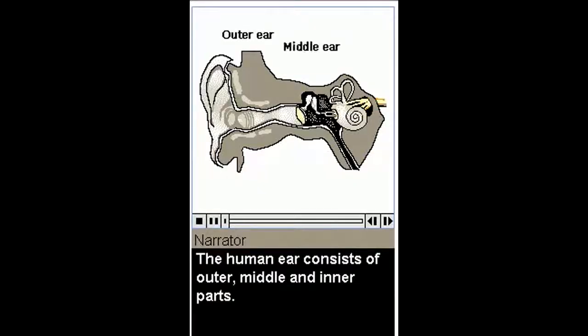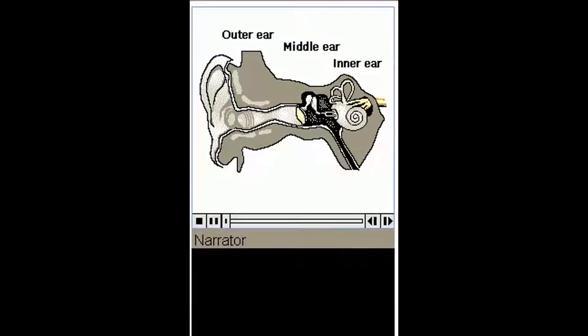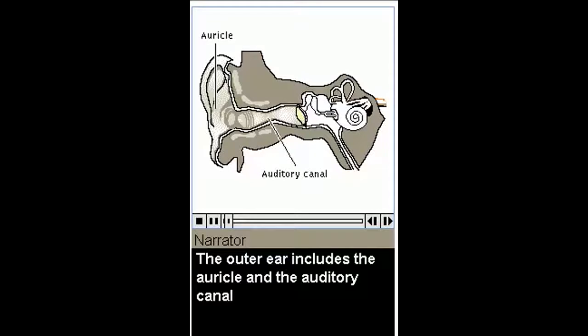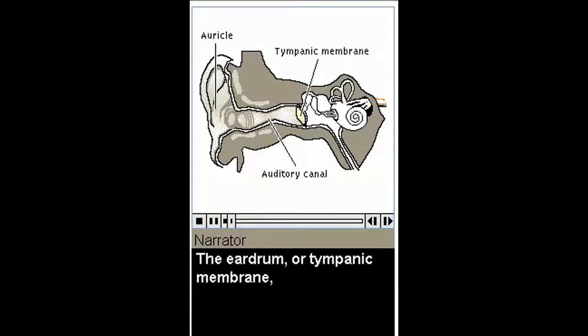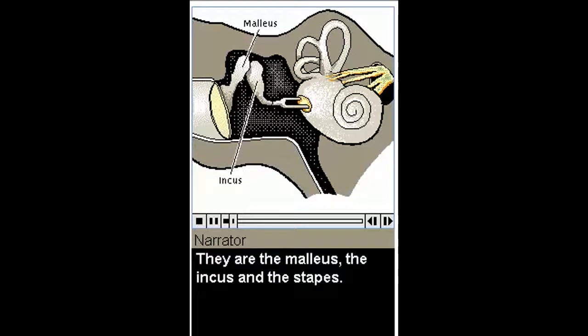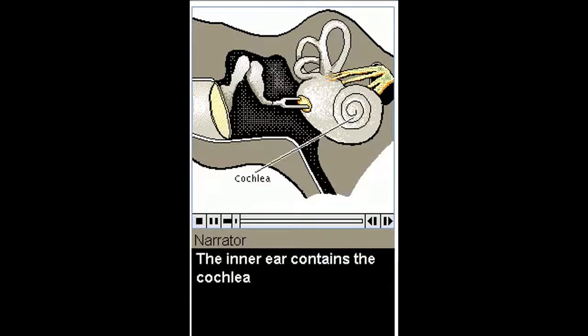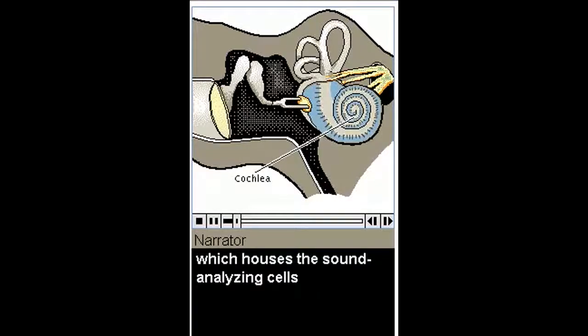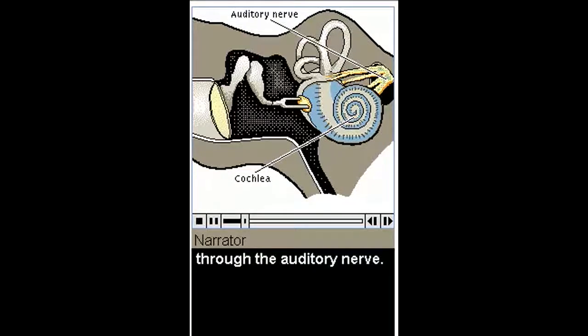The human ear consists of outer, middle, and inner parts. The outer ear includes the auricle and the auditory canal. The eardrum, or tympanic membrane, marks the boundary between the outer ear and the middle ear. The middle ear contains three small bones connecting the eardrum to the inner ear. They are the malleus, the incus, and the stapes. The inner ear contains the cochlea, which houses the sound analyzing cells. These cells are connected to the brain through the auditory nerve.